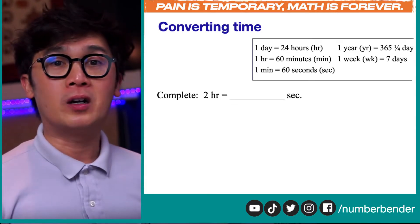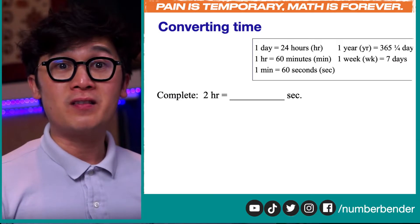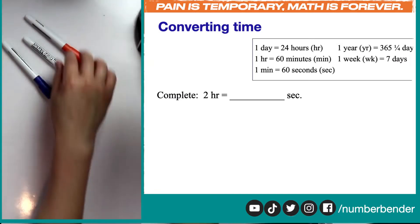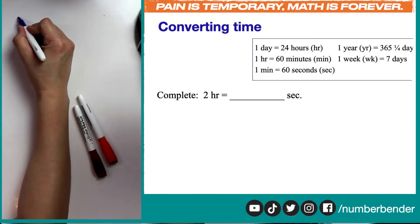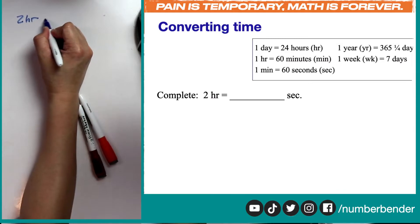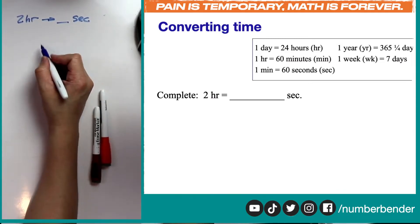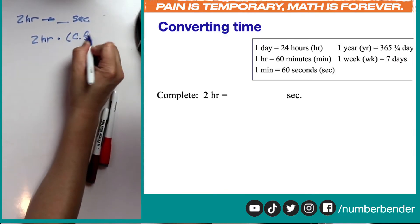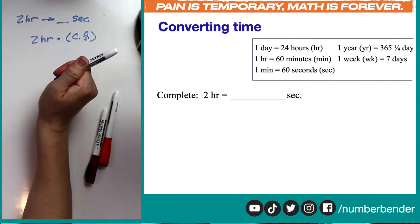Now let's use our technique from the previous lesson and see how we're going to convert this procedurally using algebra. Let's start by writing out what we need to convert, just like what we did in our previous lesson. We need to convert two hours into seconds, so the formula is to multiply two hours by the conversion factor. To produce the conversion factor, we need to formulate it using our cheat sheet.